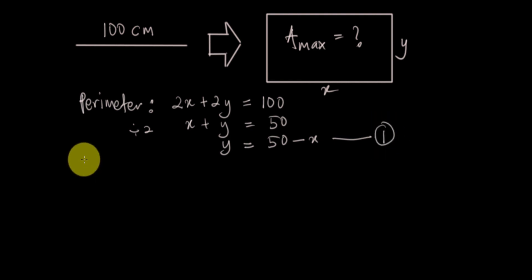Now we find the area. Area of a rectangle is x times y, A equals xy. Why we need to find the area? Because we want to find the largest possible area. You cannot differentiate this because you have two variables x and y.